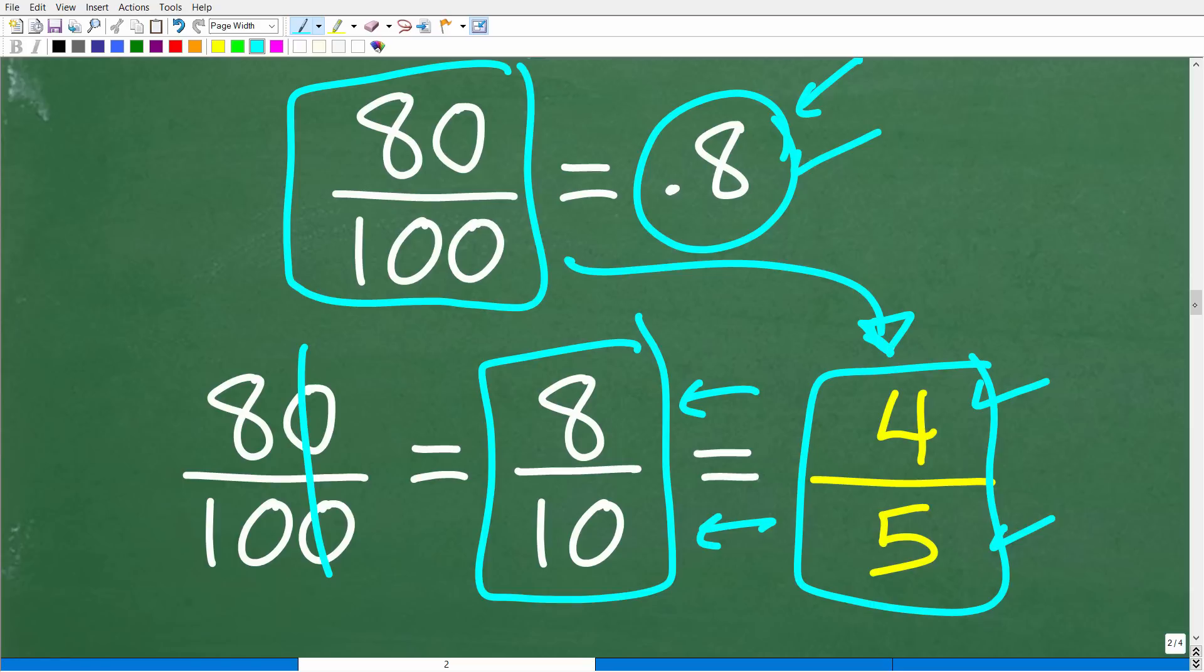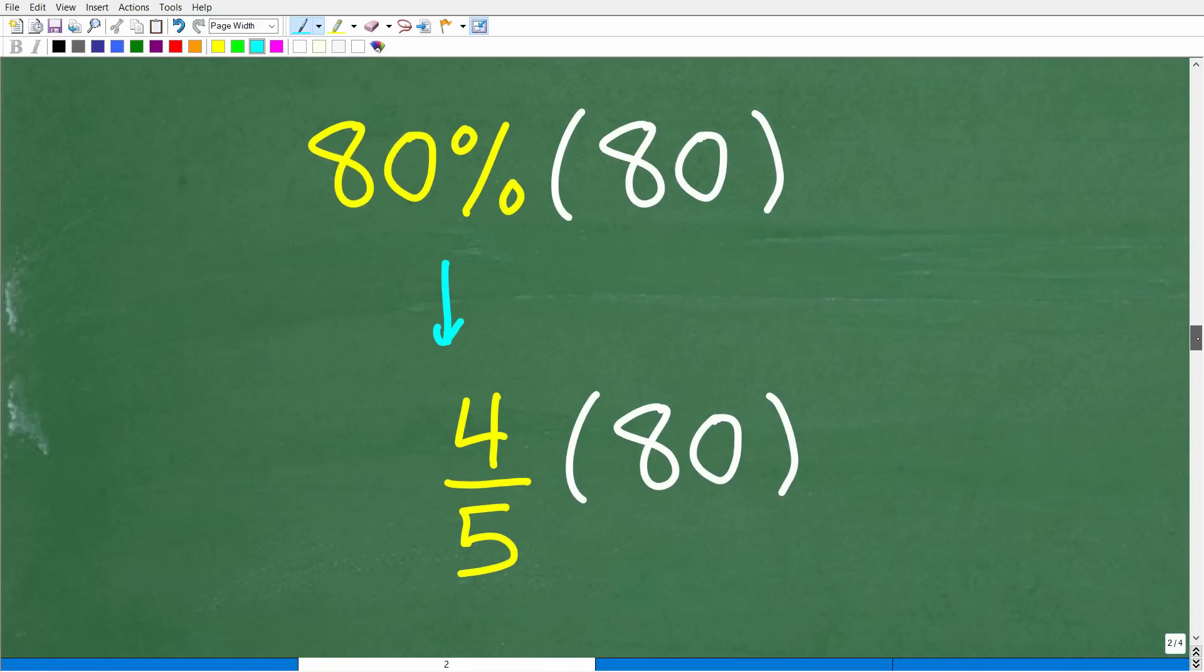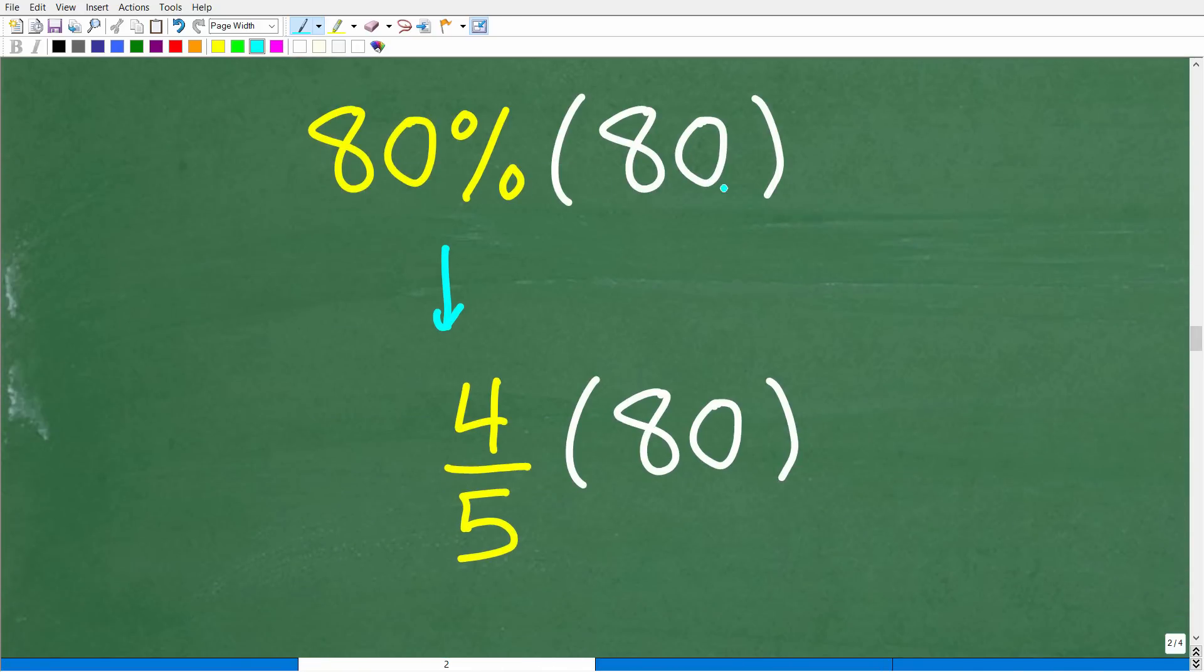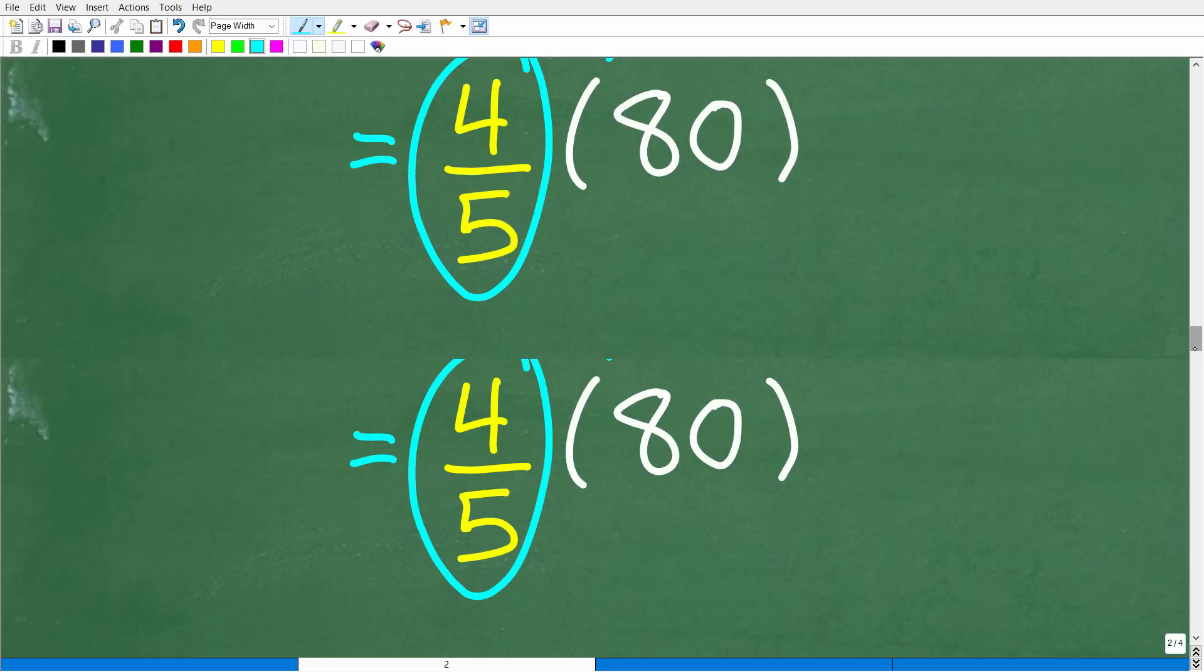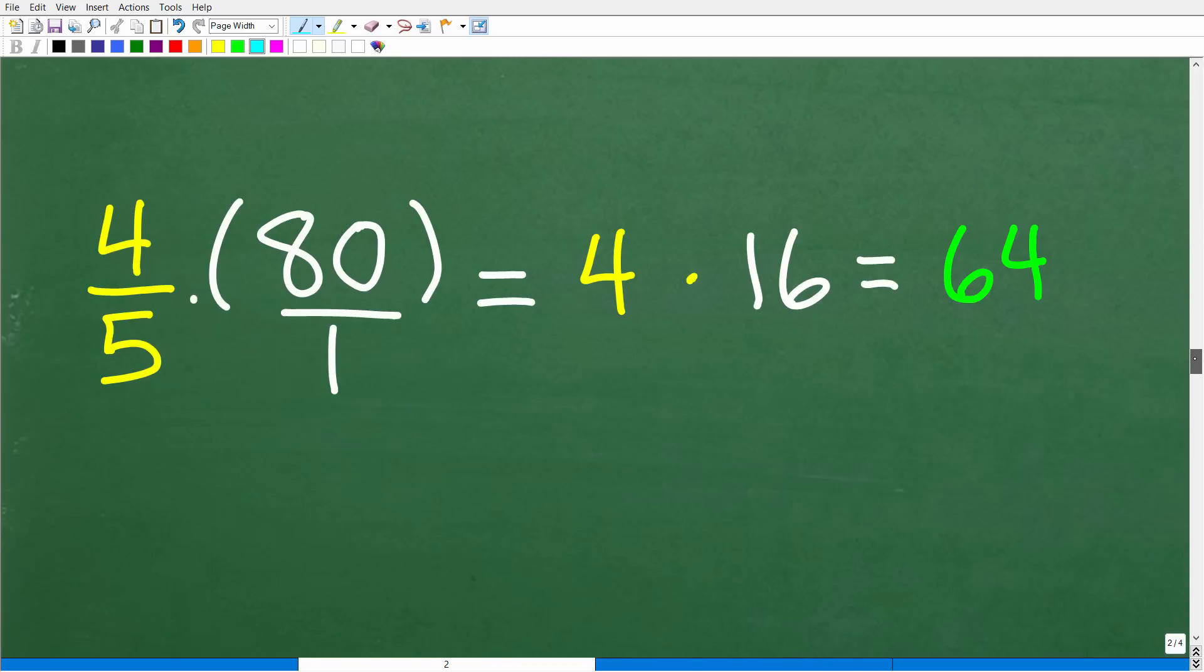What we have here is that 80 over 100 is now the same as 4 fifths. We can think of this problem this way: 80% of 80 is going to be equal to 80%, which is the same thing as 4 fifths. So now if I take this 4 fifths and multiply it by 80, I will have the correct answer. Let's do that right now.